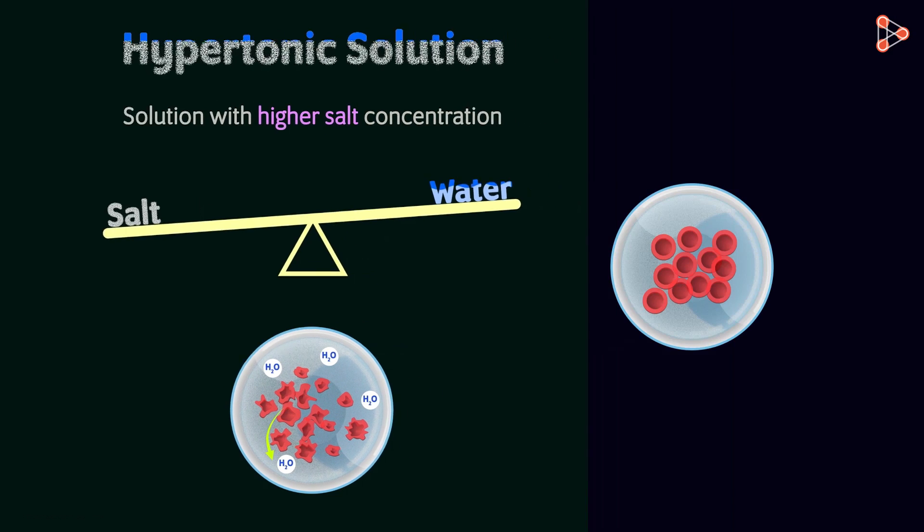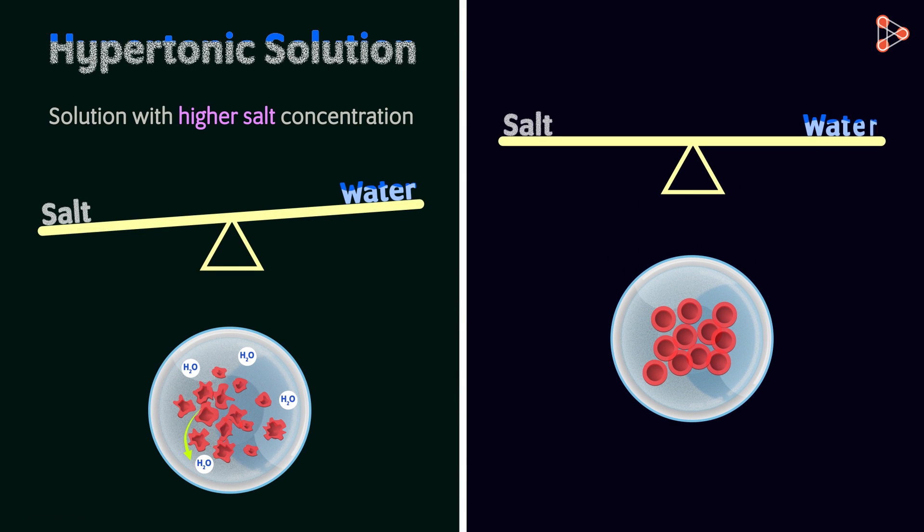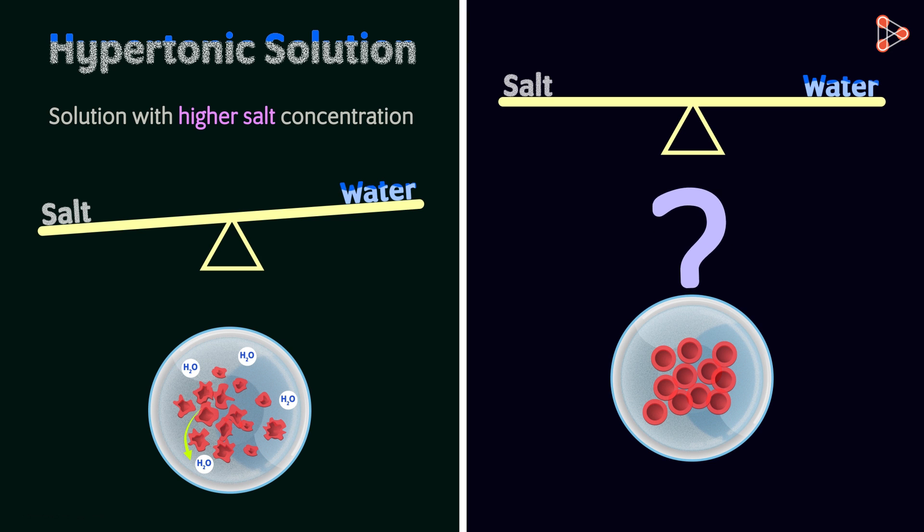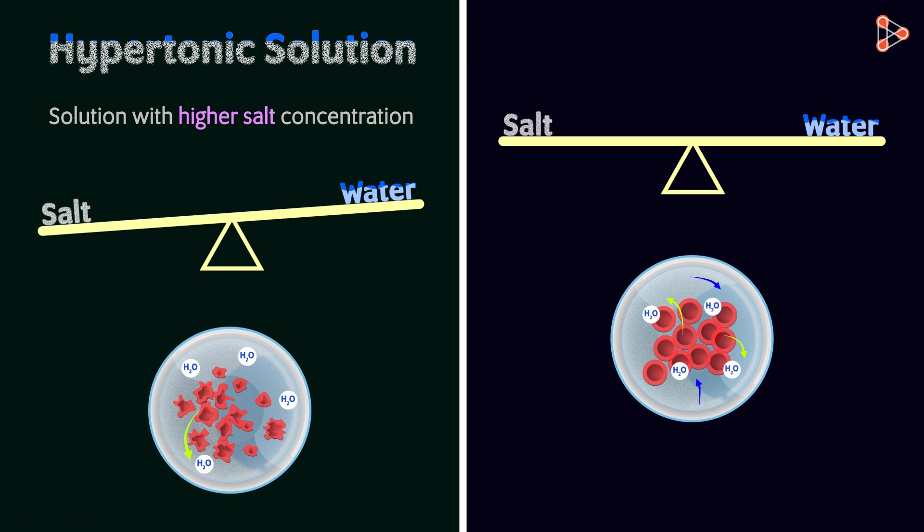Now let's have a look at the second case. Here the level of salt and water seems to be the same on either side of the cell membranes. That is both within and outside the cell. Therefore there was a balance in the movement of water. What do we understand by this? It means that the movement of water was the same in either directions. As a result, the size of the cell did not change. It remained the same.